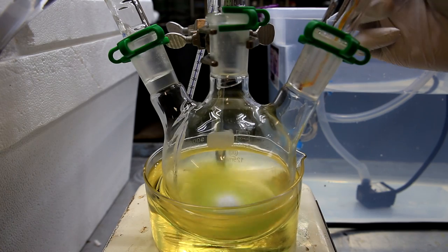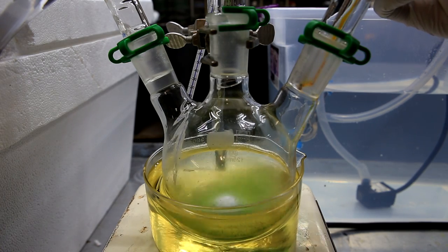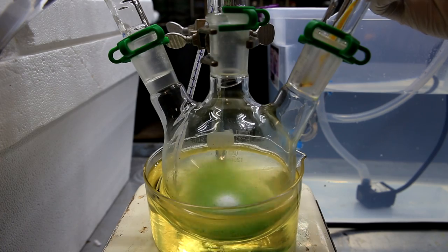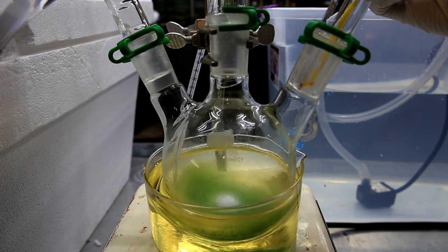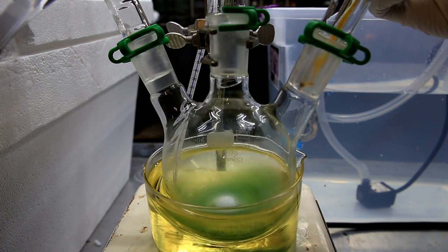The color indicates that the chromium is going from an oxidation state of plus six, which is orange, to an oxidation state of plus three, which is green. This means that it received three electrons from the n-propanol, thereby oxidizing it.